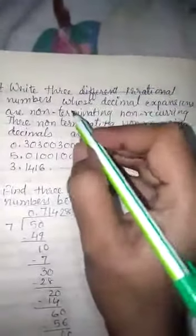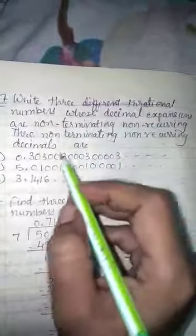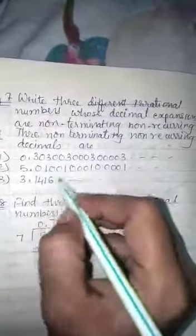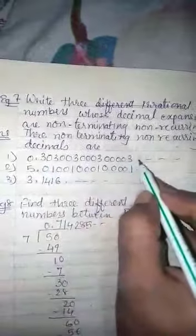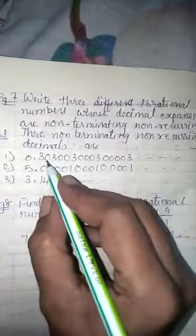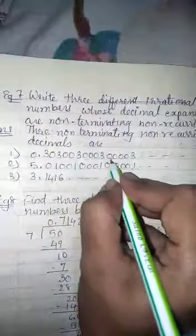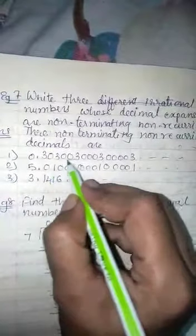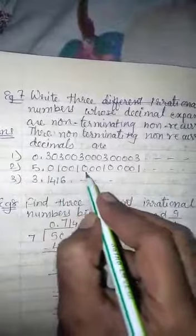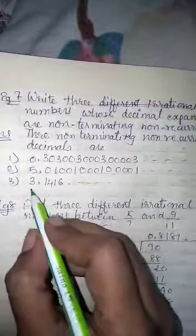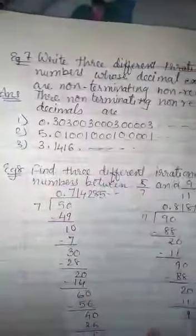Example 6 you can write on your own. Now, example 7: write 3 numbers whose decimal expansions are non-terminating, non-recurring. The digits after the decimal will be infinite, but their order will not be the same pattern repeating. For example, 0.3030030003... where 3 and 0 appear but not in the same repeating order. Similarly, 5.01001000100001... and the value of pi, 3.1416..., where no single block of digits repeats — different numbers keep appearing in the decimal places. These are all non-terminating, non-recurring decimals.